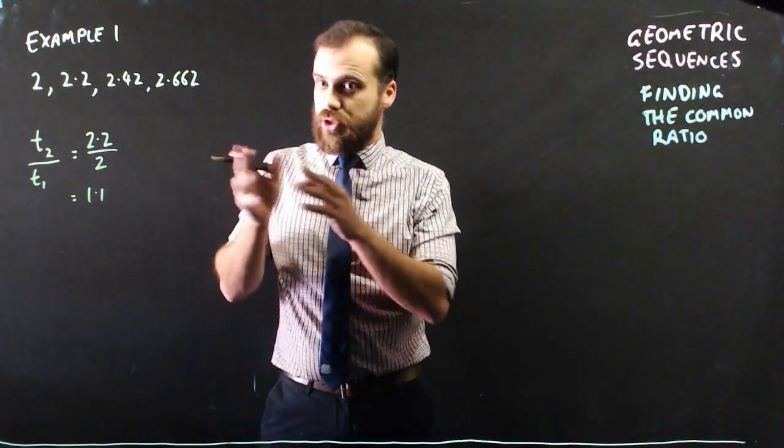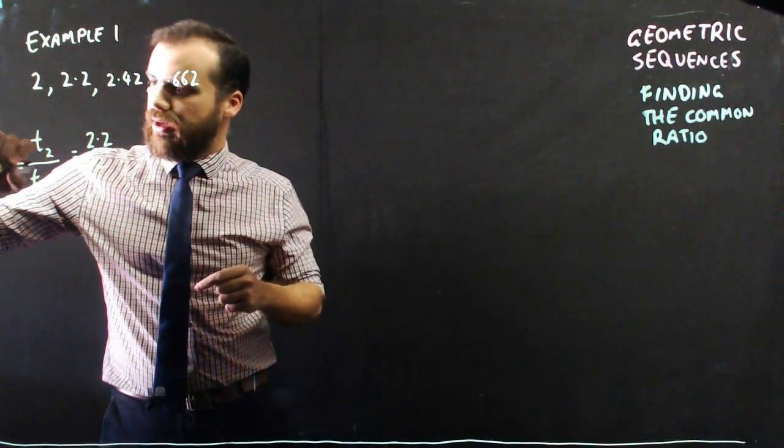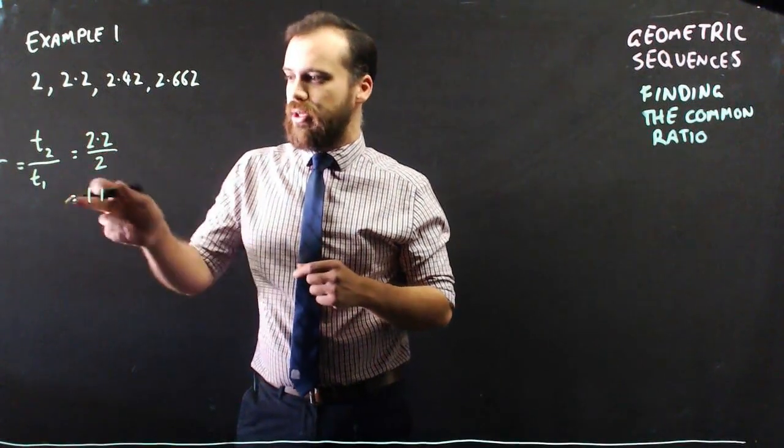Now I could have used any terms as long as one comes directly after the other. So I should probably put r. r equals term 2 over term 1 equals 2.2 over 2 equals 1.1.